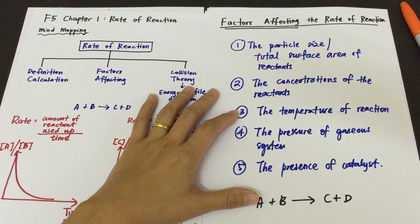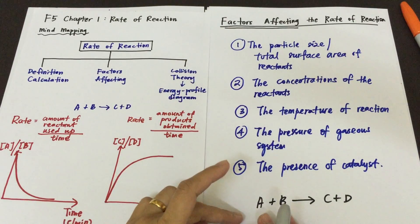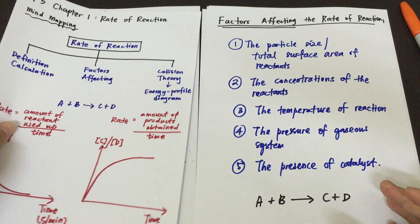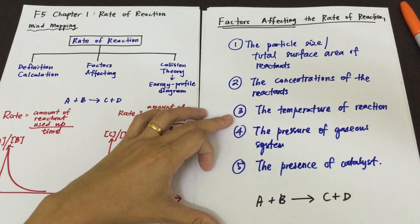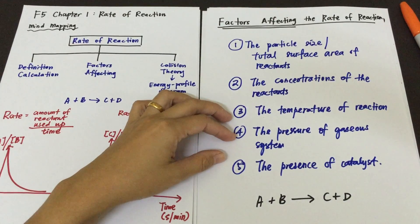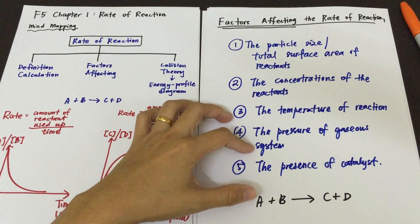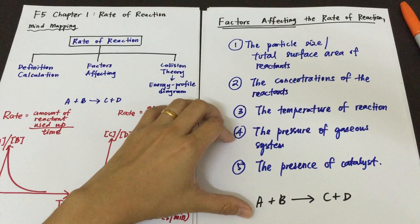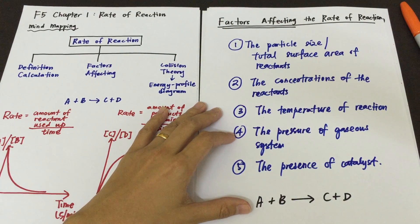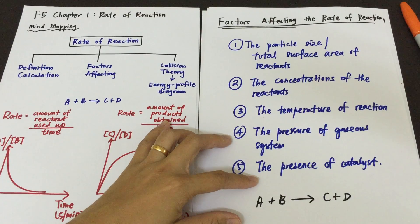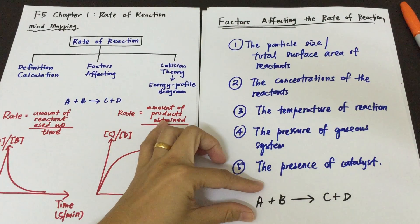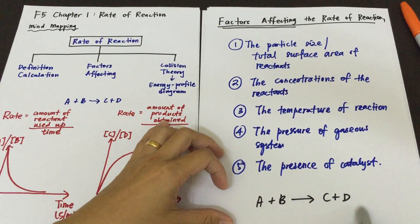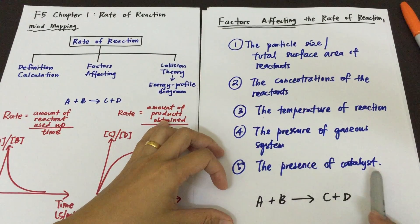For temperature, it involves the temperature of the whole reaction, because for A and B to react to form C and D, they are reacting in a reaction vessel, so the temperature required is the temperature of the whole reaction. For the pressure of gaseous systems, it only involves reactants which are gases — this particular factor we are not going to cover in detail for the Form 4 and Form 5 syllabus. The last factor is the presence of a catalyst — whether a particular reaction will be helped by the presence of a catalyst or not.